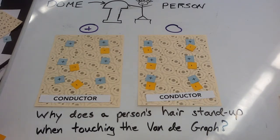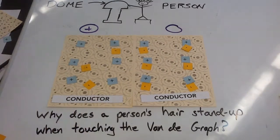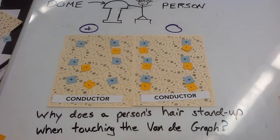So what ends up happening is the person's going to touch the dome and since we have at least one conductor, you're going to have charging by conduction, charging by contact.